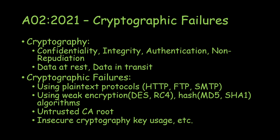The second cause is using weak encryption or hash algorithms — for example, DES and RC4 for encryption, and MD5 or SHA1 for hashing. You have some security in place, but it's not strong enough. It's like having a villa with only a wooden fence — it's very weak, not like a concrete fence, so it's vulnerable to attacks.